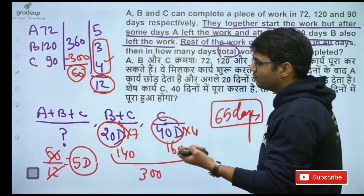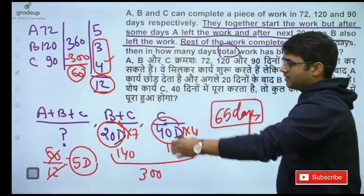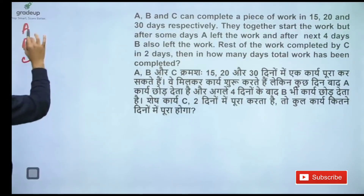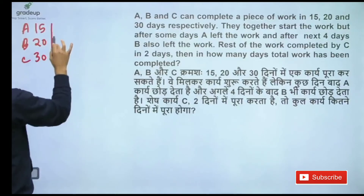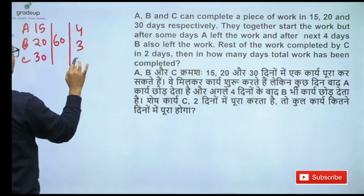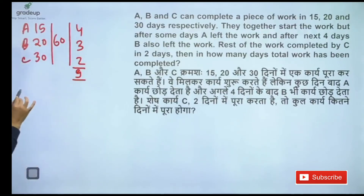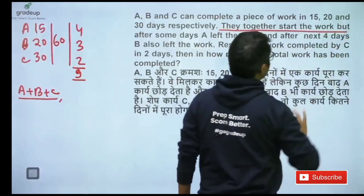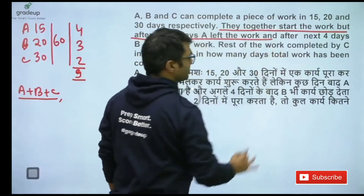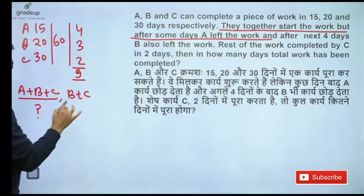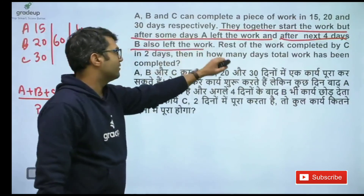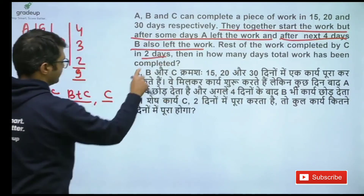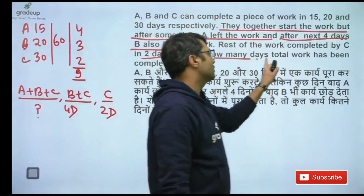After practicing more and more you can do this — the structure only. A, B, C: LCM = 60, units are 4, 3, 2, total = 9. ABC start the work together, but after some days A left the work — question mark. We are left with B and C, after next 4 days B also left the work, and the rest is completed by C in 2 days.